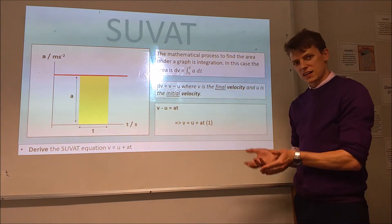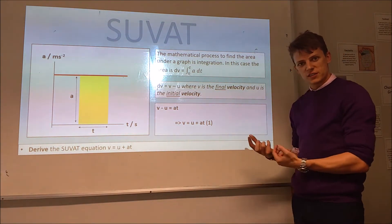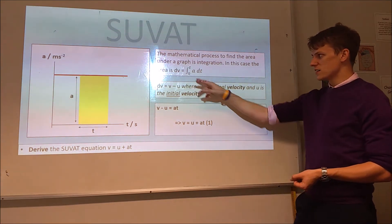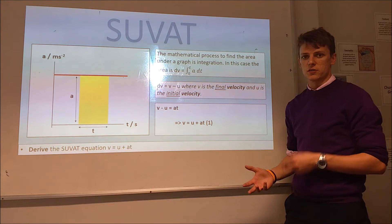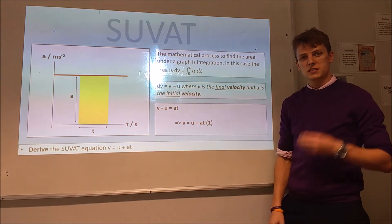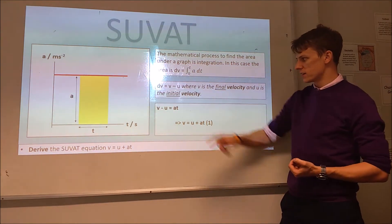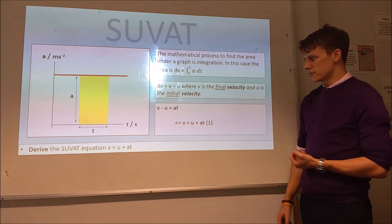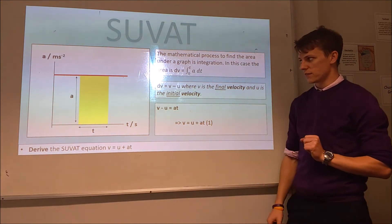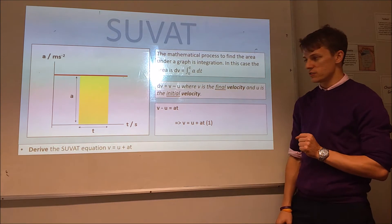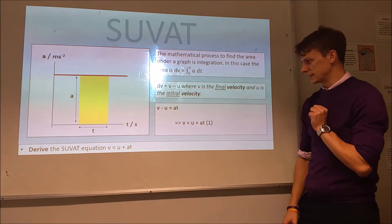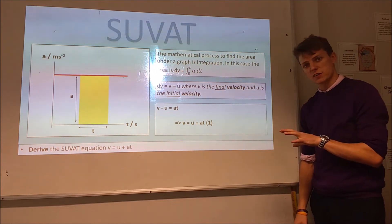So, in SUVAT, acceleration is a constant, so this is a nice, easy integration. So, actually, when you integrate this, it just turns out to be at, so the dv is equal to a times t. We know that the change in velocity is the final minus initial, so v minus u, so we can put that together as v minus u equals at, or v equals u plus at, which we should have seen before. But this time, we just use a bit of integration instead of just doing it by the area from the graph directly. Okay, so that's our first SUVAT equation.